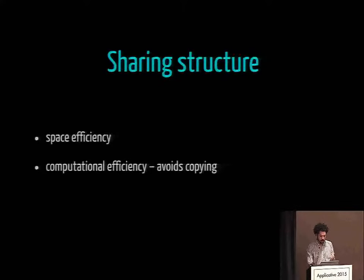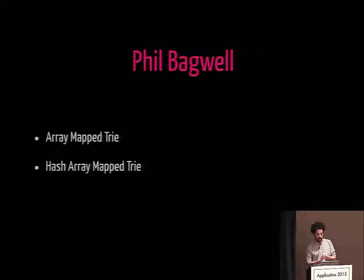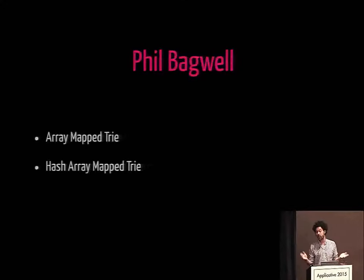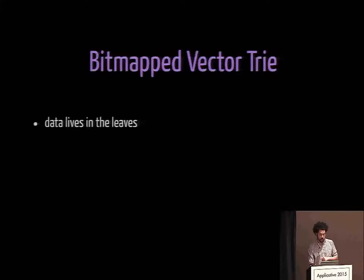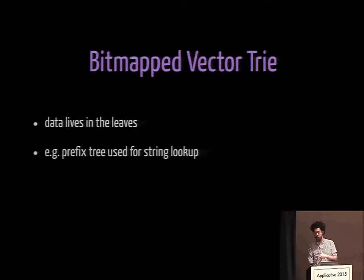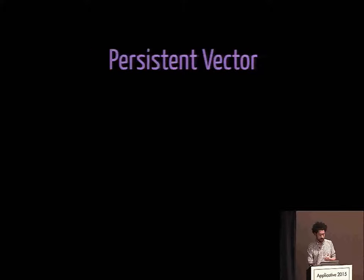The two big foundations of fast persistent data structure research are array map trees and hash array map trees. They were invented by the late Phil Bagwell at EPFL, the home of Scala. The original papers are very cool — the original versions were actually not immutable, but the design was interesting and it wasn't hard to tweak to make an immutable variant. I'm going to talk about one specifically because it's the easiest to explain: the bit-mapped vector tree. The idea is data lives in the leaves — it's a prefix tree, a bitwise tree. This was innovated by Rich Hickey who designed Clojure, taking Phil's original research and making an immutable variant.